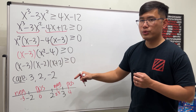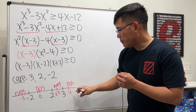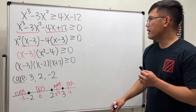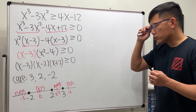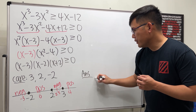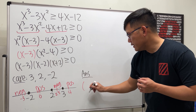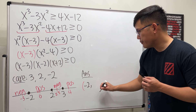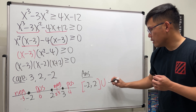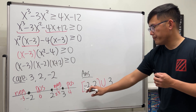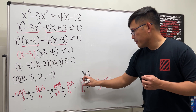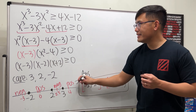Pick a number greater than three, say four — all factors are positive, so the product is positive. We're looking for greater than or equal to zero, so we include the critical values themselves. The answer is: from negative two to two (inclusive), union three to infinity (inclusive): [−2, 2] ∪ [3, ∞).